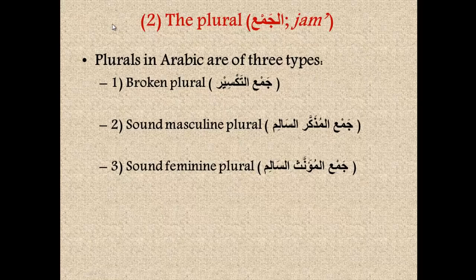Moving on to topic number two: the plural, or al-jam'a. Plurals in Arabic are of three different types — every single plural you encounter will fall under one of these three categories. Number one, we have the broken plural, jam'a al-takseer. Next, you have the sound masculine plural, jam'a al-mudhakar al-saleem. And lastly, you have the sound feminine plural, jam'a al-mu'annath al-saleem. Al-mudhakar is masculine, mu'annath is feminine, and salim means sound — something that is intact, unbroken, and sound.